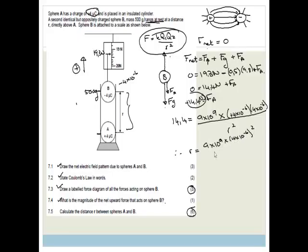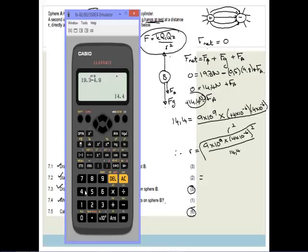Therefore, R is equal to 9 times 10 to the 9 times 4 times 10 to the negative 6 squared, all over 14.4, all square rooted. And I apologize for the script writing.